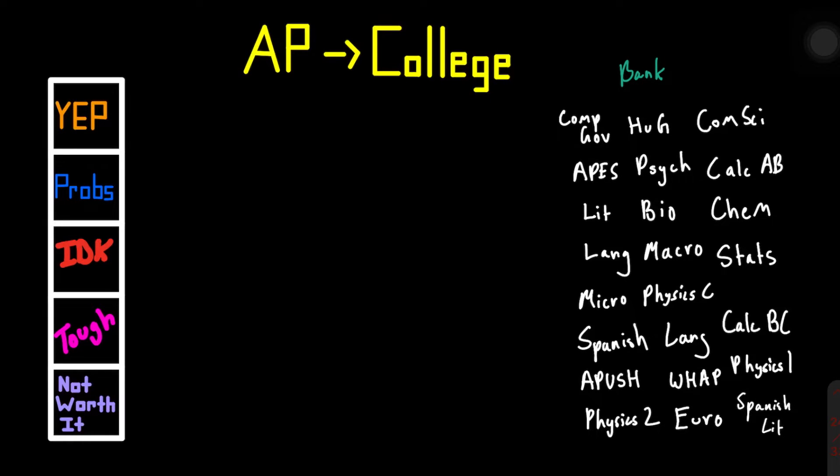So let's go over the categories real fast. Yup means that it definitely counts and helps. Probs means that it most likely counts. I don't know means it really fluctuates. Tough means that it probably doesn't help and the exam is probably not worth your time and money. And not worth it means that it's a complete waste of your time. Maybe take it to boost your GPA, but not really for credit. So let's get right into it.